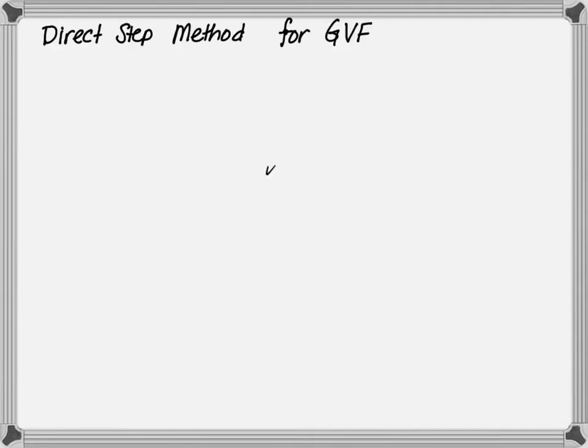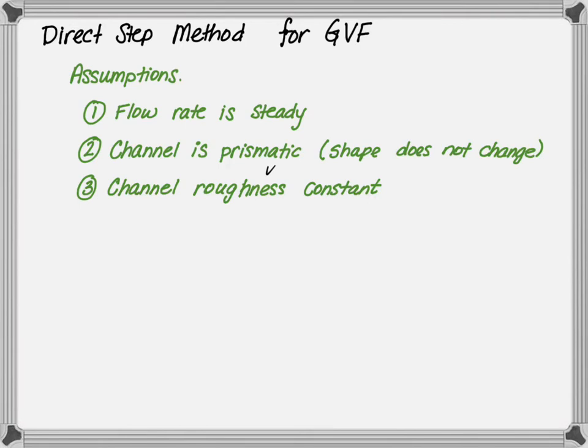We're going to learn about the direct step method for gradually varied flow. The following are the essential assumptions: First, our flow rate is steady, meaning the flow is constant in the channel during our analysis. Next, our channels are prismatic, so the shape of the channel will not change. Finally, the roughness within the channel is constant. This is essential in using the direct step method.